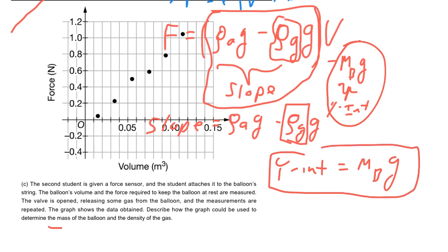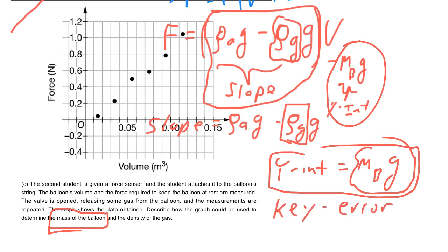The answer key does ask you to find the mass of the balloon from the y-intercept. There is actually a typo in the key — a slight minor mistake — which you can figure out as you grade yourself. Let me know if you have any questions.